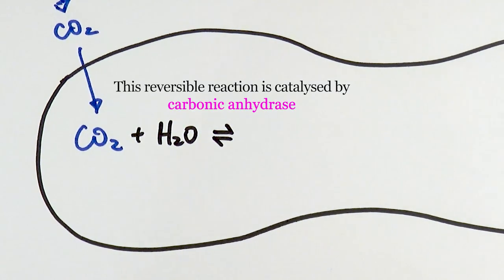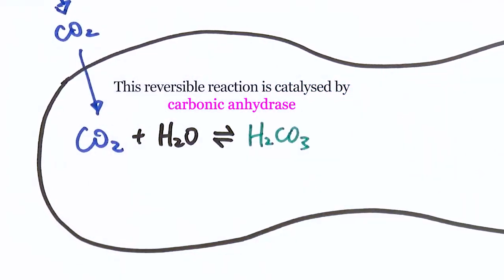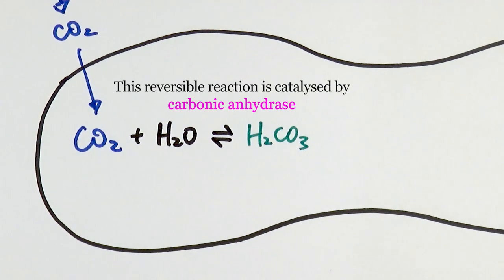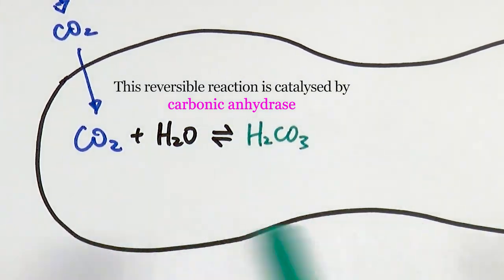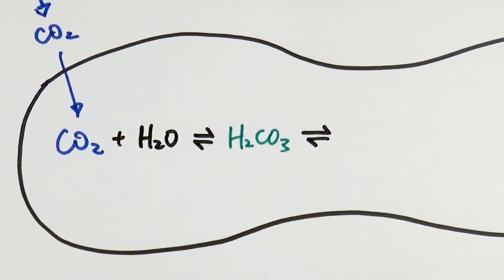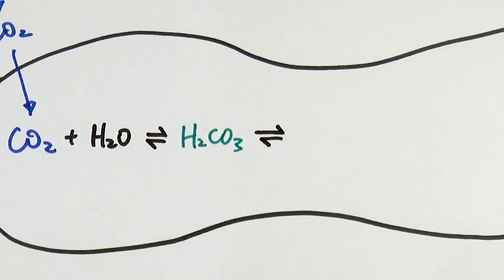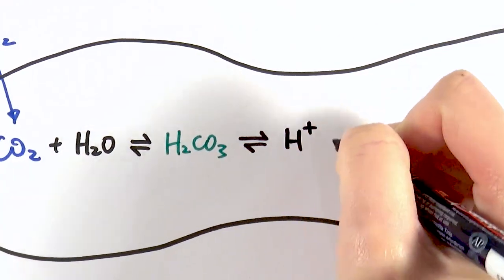Once inside the red blood cell, the carbon dioxide reacts with water to form carbonic acid, H₂CO₃. Notice that the sign here is reversible because the whole process can be reversed. Carbonic acid is what we call a weak acid and it can dissociate or ionize very easily.